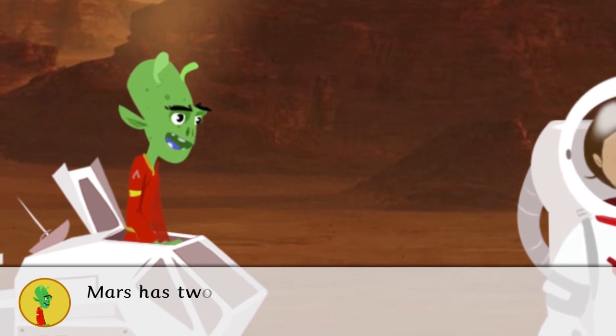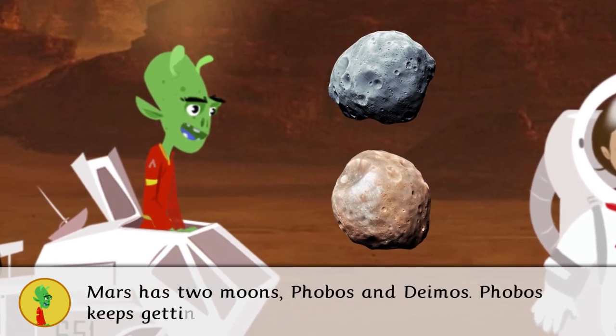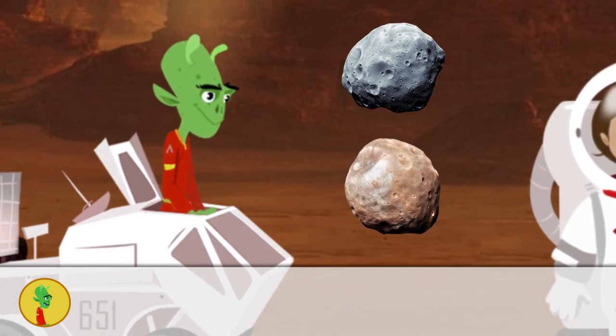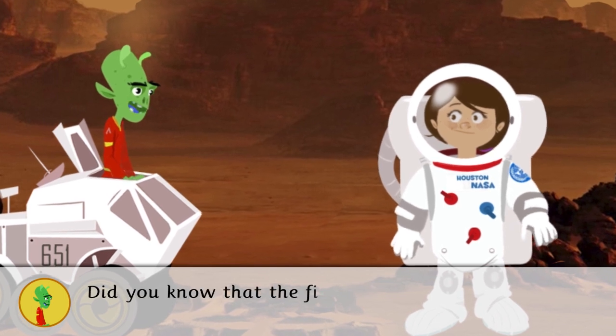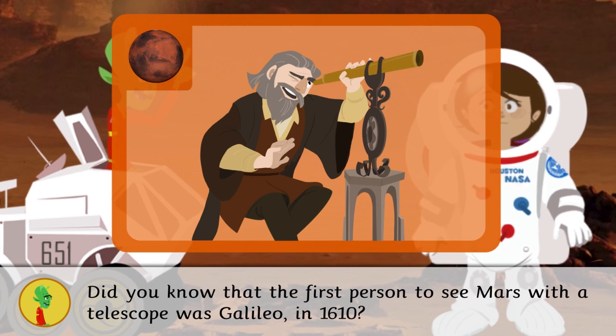Mars has two moons, Phobos and Deimos. Phobos keeps getting closer and closer and will eventually crash into Mars. Did you know that the first person to see Mars with a telescope was Galileo in 1610?